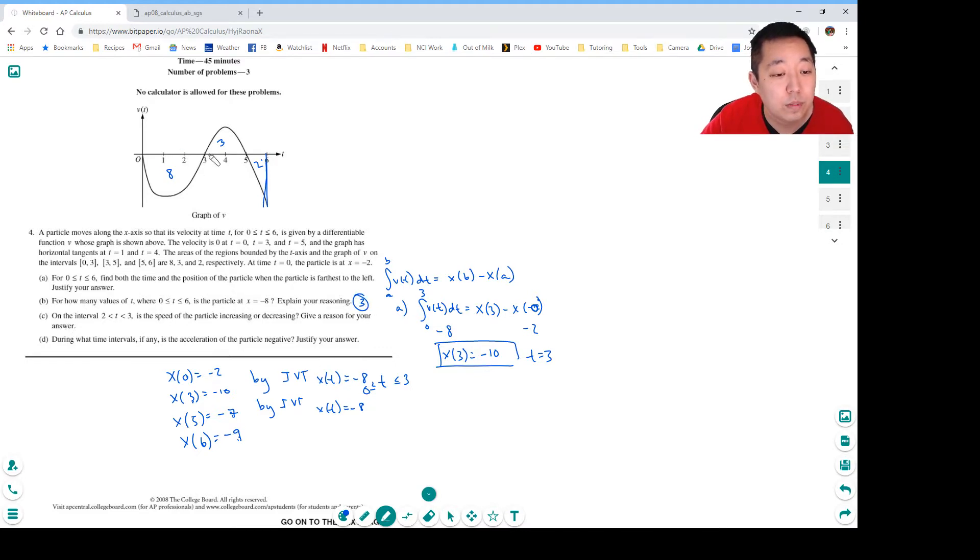On the interval from 2 to 3, is the speed of the particle increasing or decreasing? The speed is negative and then it gets less negative so it's actually slowing down. The general justification that you typically do is if the acceleration is a different sign from the velocity. So v between 2 and 3 is less than 0, the acceleration a is dv/dt and that's greater than 0.